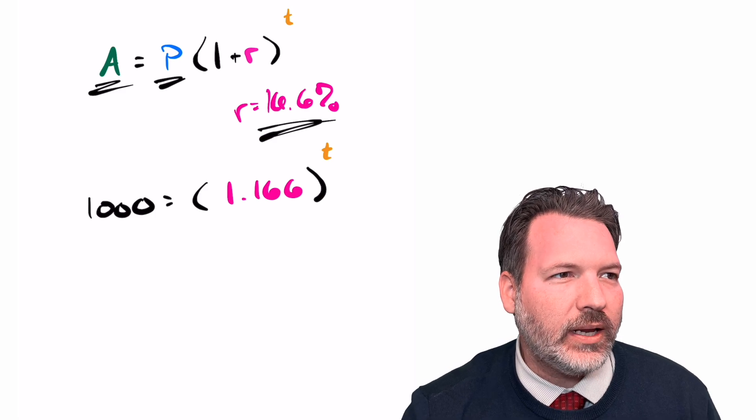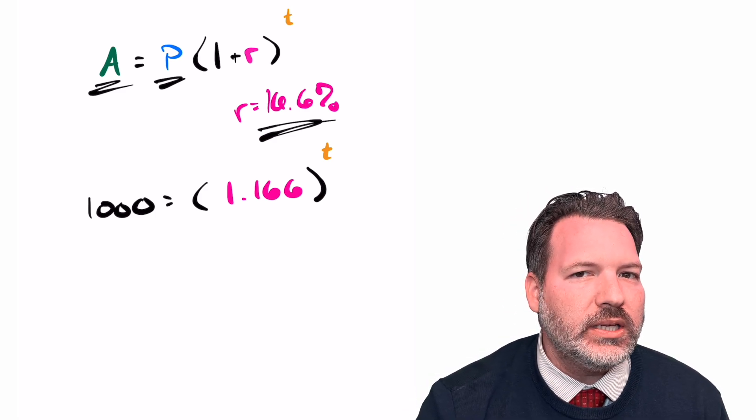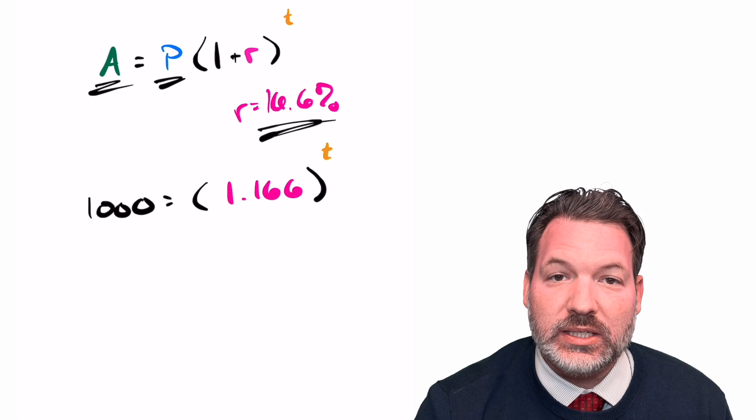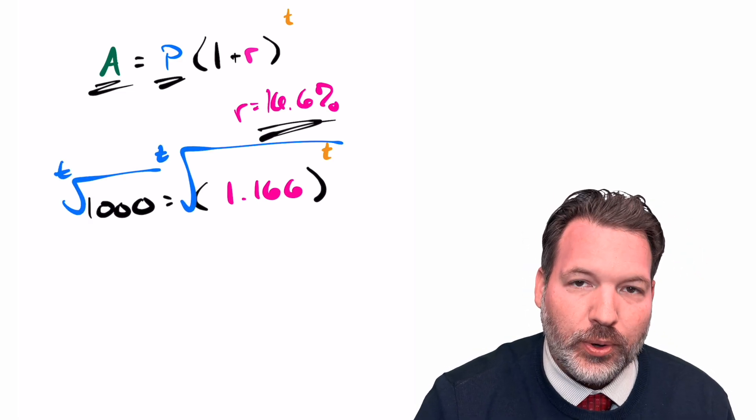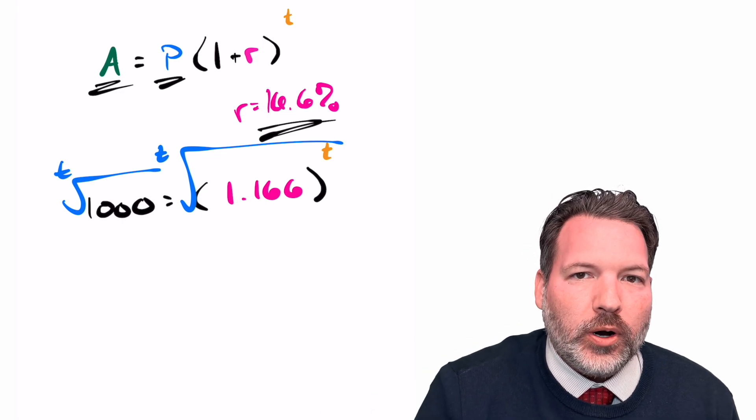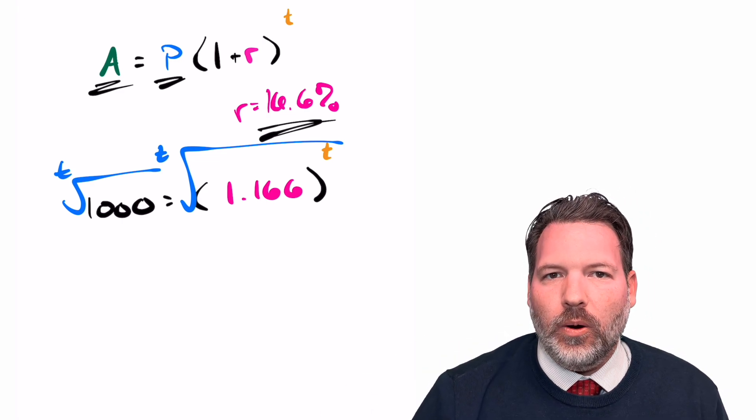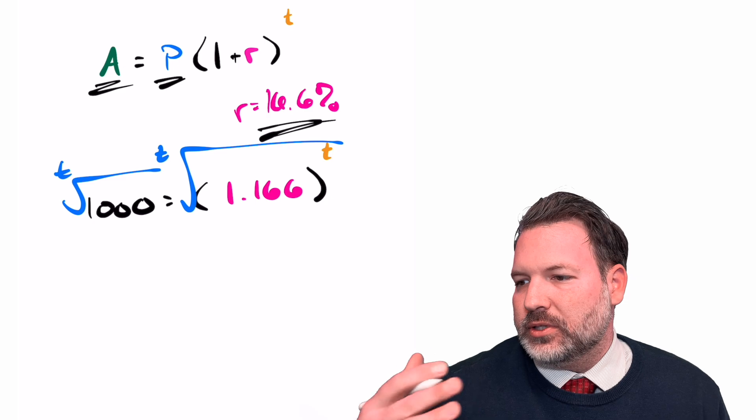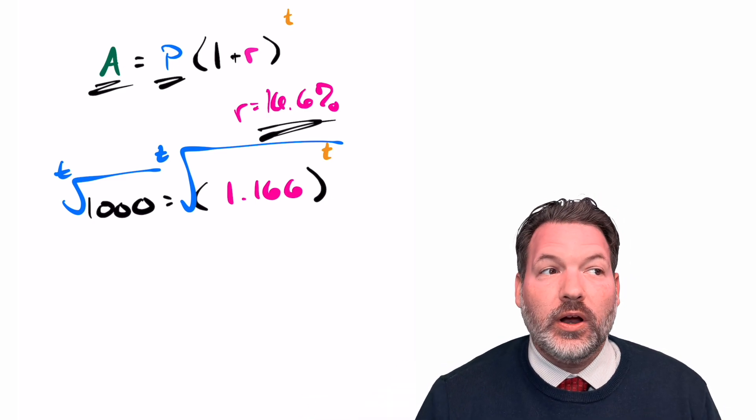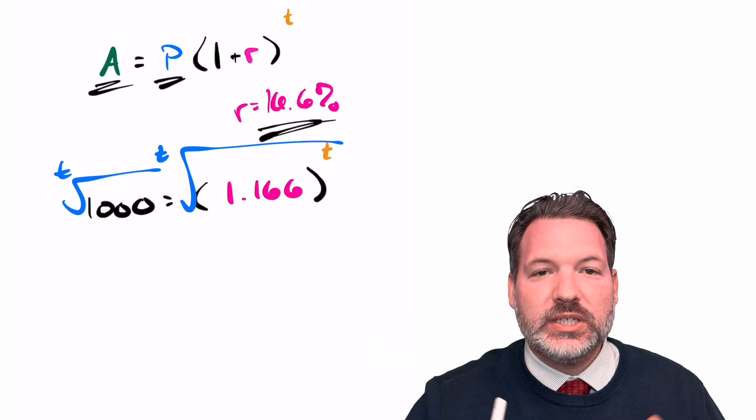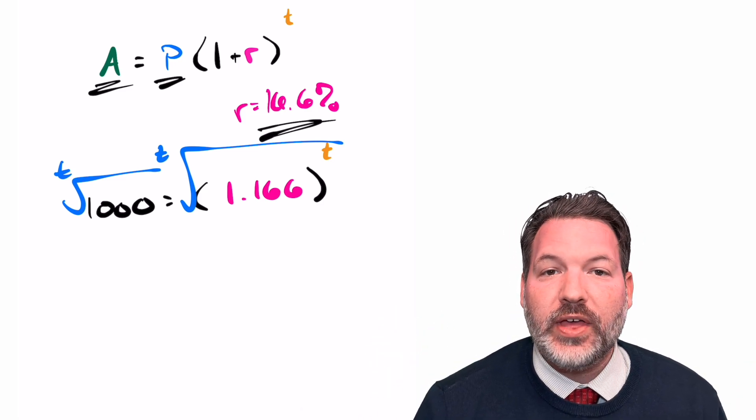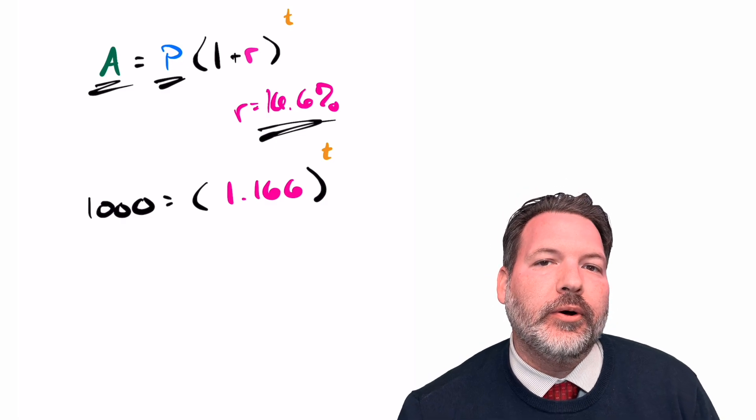Now, the temptation here is to try and do basically the same move we did before when we took a 60th root. But the problem right now is if I tried to take a root on both sides, it's that number that is precisely what I don't know. I don't know if it's 6 years, 10 years, 30 years, whatever. And so I don't know what to type into a calculator for the 60th root or 10th root or whatever else of a thousand. When it's the exponent that we don't know, we actually need a different tool called a logarithm.